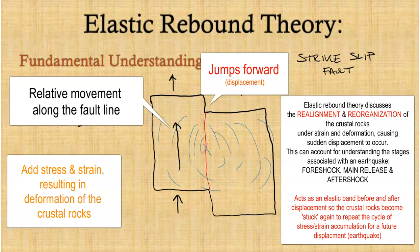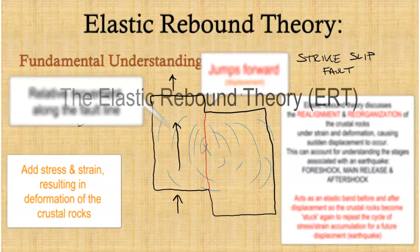This is the same idea as elastic rebound theory: the ground moves and distorts under stress and strain, snaps, and the energy is released through displacement. The vibrations and reorganization of crustal rock cause the earthquake and this series of events — foreshock, main earthquake, and aftershock.